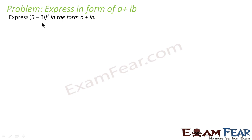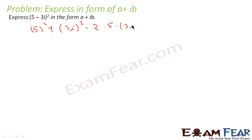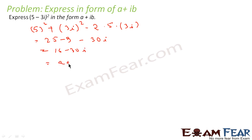Now we will do some problems where we are supposed to express in the form of a + ib. If we have the number (5 − 3i)², we have to express it in the form of a + ib. Using (a − b)² = a² + b² − 2ab, we get 25 − 9 (because (3i)² = −9) minus 30i. This is nothing but 16 − 30i, which is in a + ib form where a = 16 and b = −30.